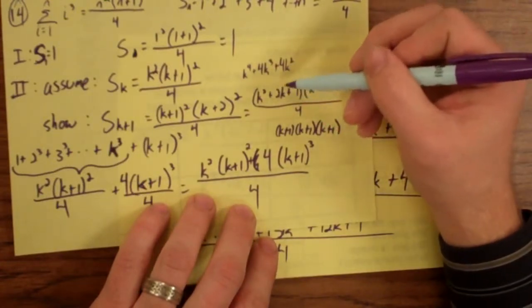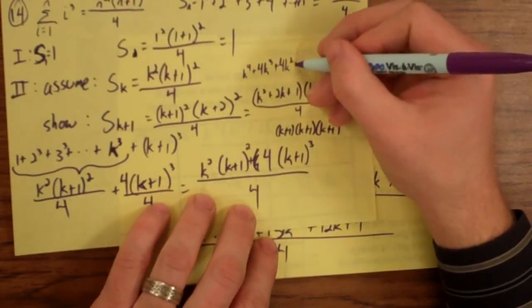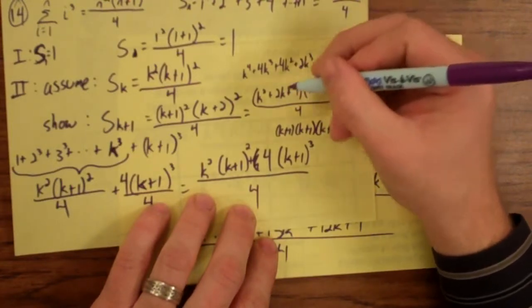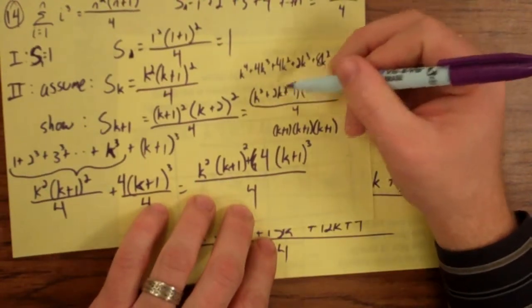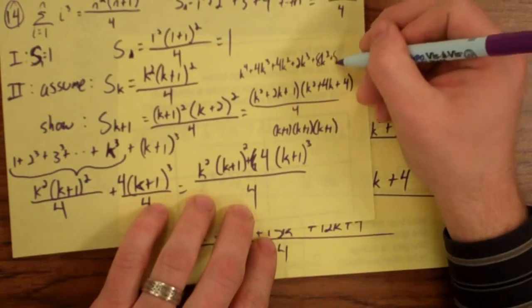And so we move on to 2k. 2k times k squared is 2k to the third. 2k times 4k is 8k squared. 2k times 4 is 8k.